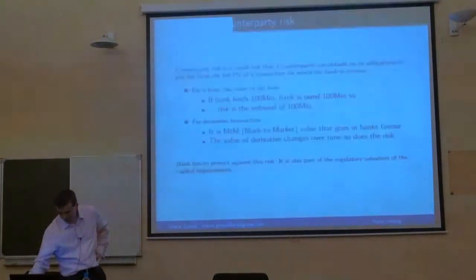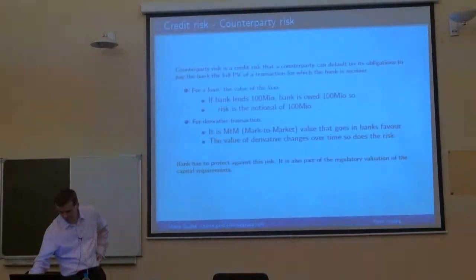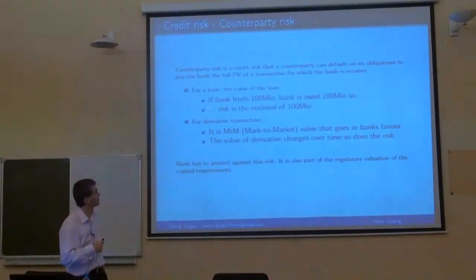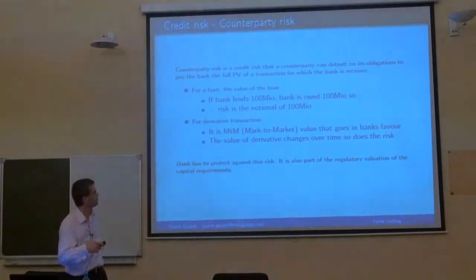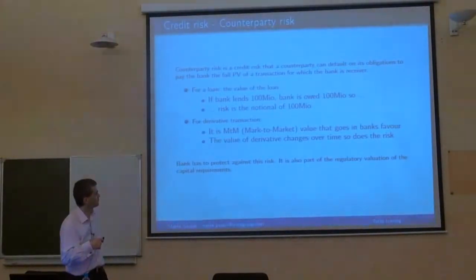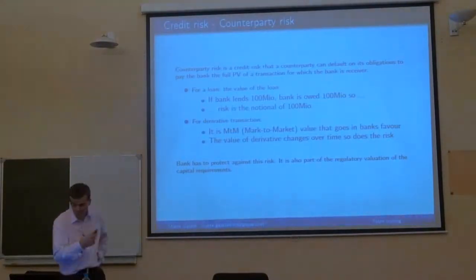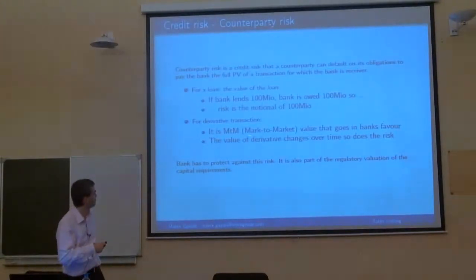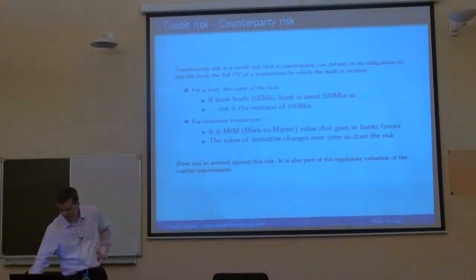That covers funding risk and the credit risk that a counterparty can default. Example: we lend 100 million and expect 100 million back at the end of the loan — the risk is 100 million. For a derivative it's mark to market. Every transaction has a certain level of risk. That's why Basel 3 also defines certain weights, but here we can calculate, based on the counterparty's probability of default, how much the risk is.